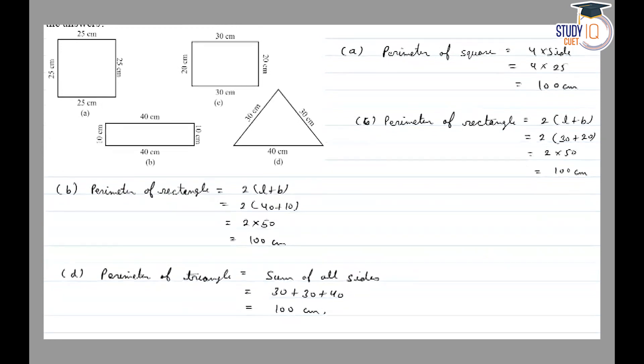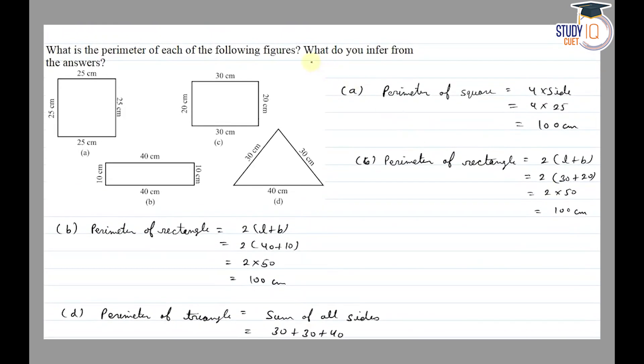So we have all the perimeters found. The second question is: what do you infer from the answer?